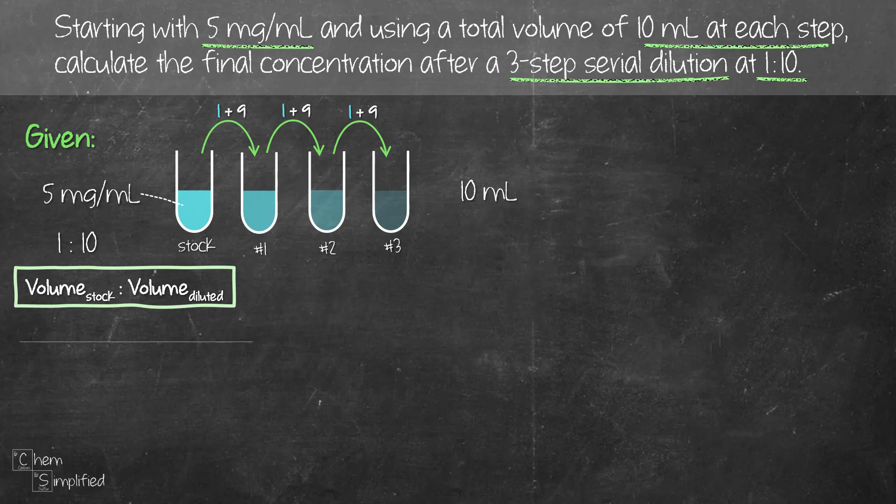We stir it up, and then after that we take 1 mL from test tube number 1 and add 9 mL of water, stir it up, and that gives us the solution in test tube number 2. Then we do the same thing for our third step. We take 1 mL from test tube number 2 and add 9 mL of deionized water, and in total we get 10 mL of diluted solution in test tube number 3. So with that we've done three steps of serial dilution at 1 to 10 ratio.